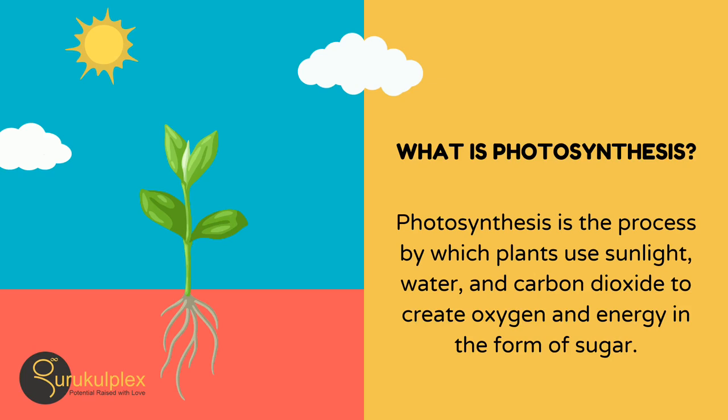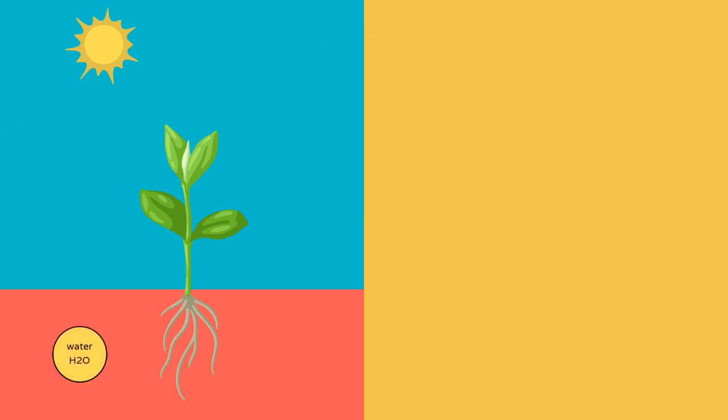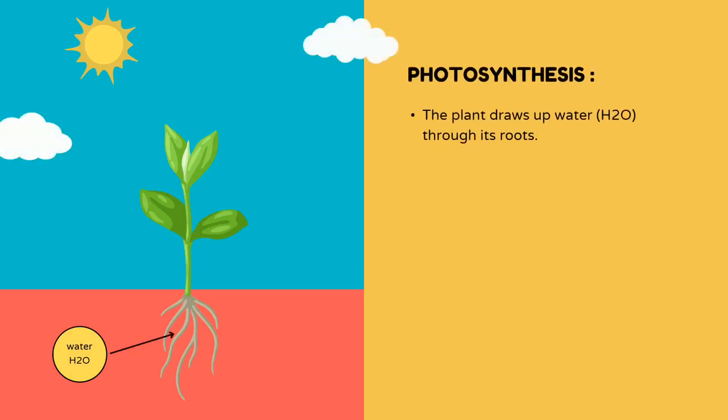Without photosynthesis, there would be no plants, animals, or humans. Plants absorb energy from the sun during photosynthesis and use it to convert carbon dioxide and water into glucose, a sugar, and oxygen.